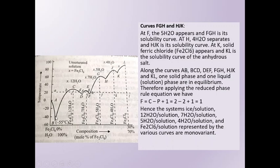The curves AB, BCD, DEF, FGH, HJK, and KL each represent equilibrium between one solid phase and one liquid phase. Applying the reduced phase rule, F = C − P + 1: with two components and two phases in equilibrium, F = 2 − 2 + 1 = 1. Hence, any point on these curves — representing ice-solution, FeCl₃·12H₂O with solution, FeCl₃·7H₂O with solution, etc. — is monovariant.